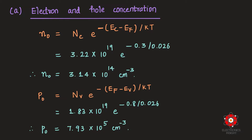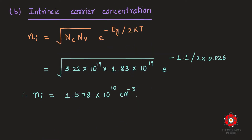For hole concentration, we use p₀ = Nv × exp[−(Ef − Ev)/kT]. We use Nv as given and Ef − Ev = 0.8 eV just calculated, with kT/q = 0.026 eV. This allows us to easily find the hole concentration.